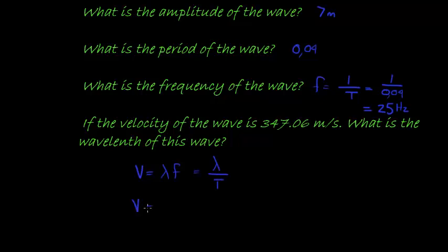So velocity is equal to... we have velocity is 347.06 is equal to lambda. There's the wavelength we're trying to calculate, and I'm going to use frequency, it's such a nice number, 25. And then lambda is 347.06 divided by 25.